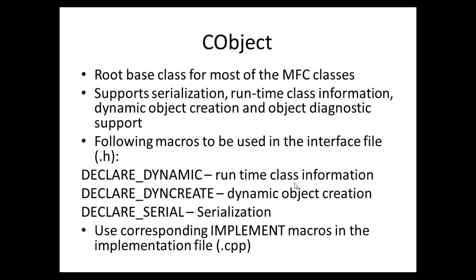Serialization is the concept of storing and retrieving objects to a permanent storage. For example, if there is a class CPerson derived from CObject, you can store and retrieve the object to a file — that is called serialization. Runtime class information helps you check if a particular object is derived from a particular class or not. Dynamic object creation is the creation of an object dynamically. Object diagnostic support is about dumping your object for later analysis.